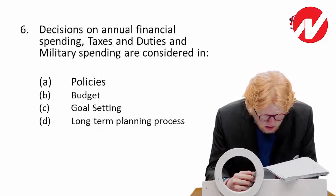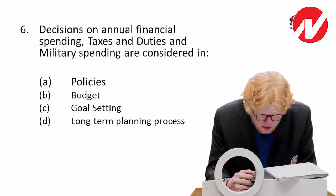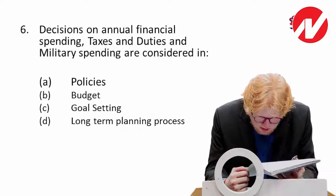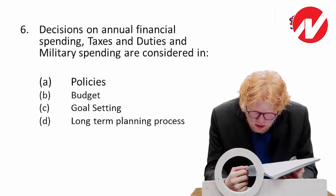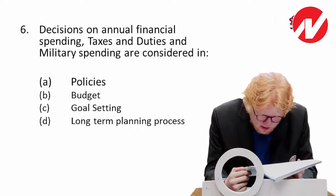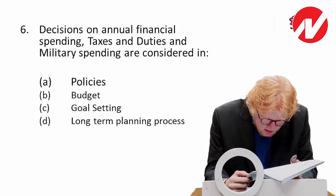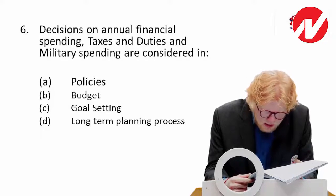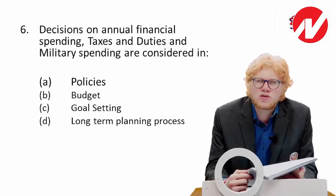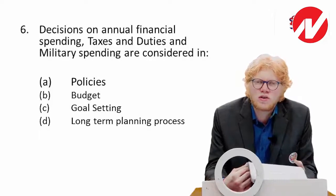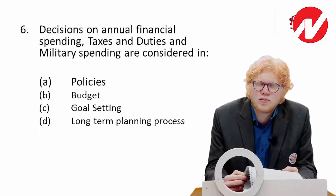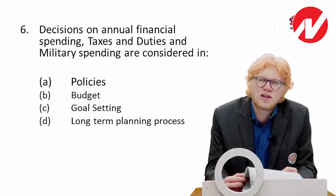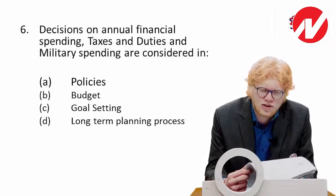Next: decisions on annual financial spending, taxes and duties, and military spending are considered in which — policies, budget, goal setting, or long-term planning process? The answer is budget, because it is talking about decisions taken when the budget is presented, after which policies are formed.